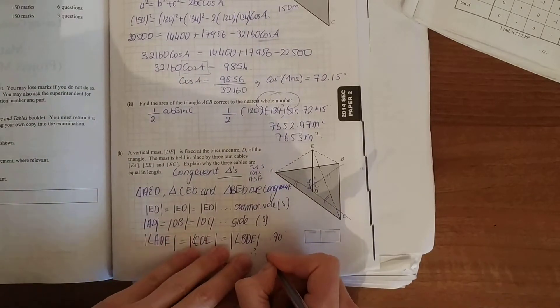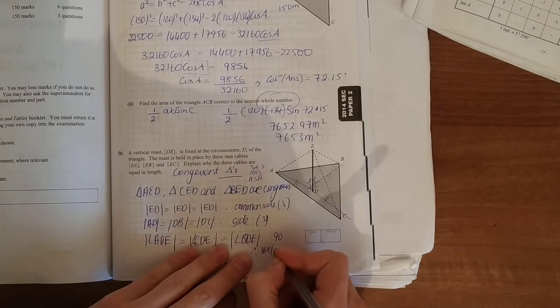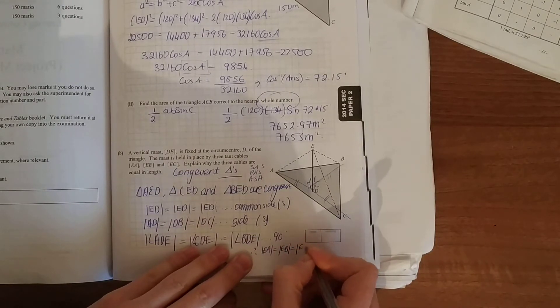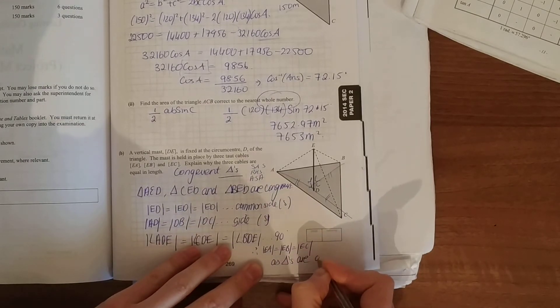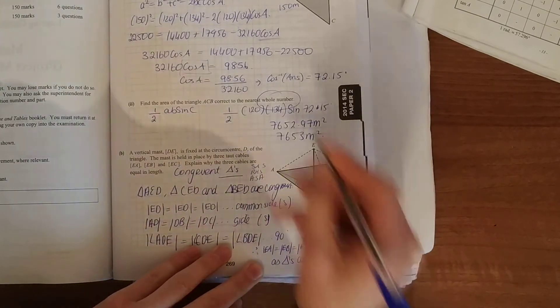Therefore, EA is equal to EB is equal to EC. The triangles are congruent, and that's it.